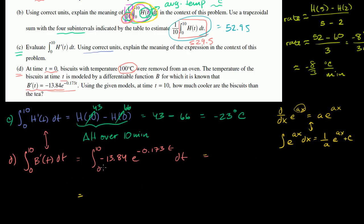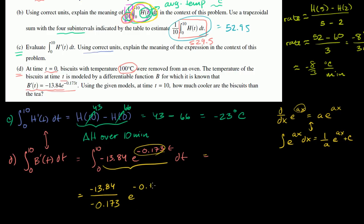Using that idea, the antiderivative of our expression is going to be negative 13.84 divided by negative 0.173, times e to the negative 0.173t. We can use a calculator — calculators are allowed for this part of the problem. We evaluate that from 0 to 10, evaluating at 10 and subtracting the result evaluated at 0.